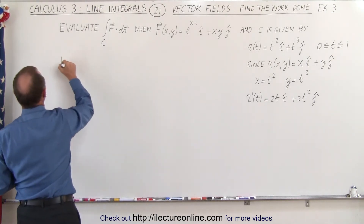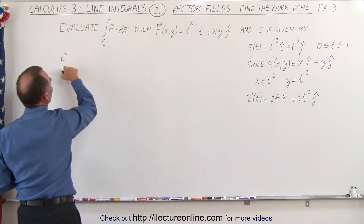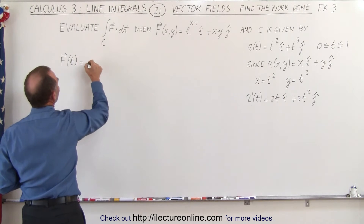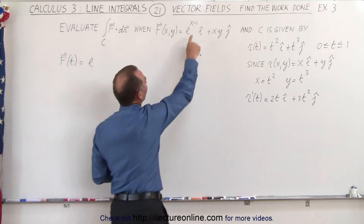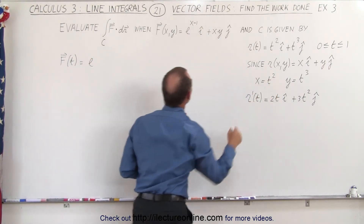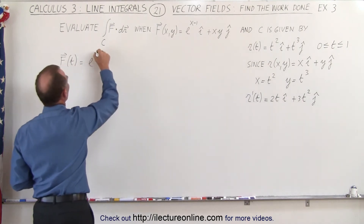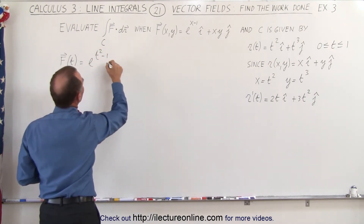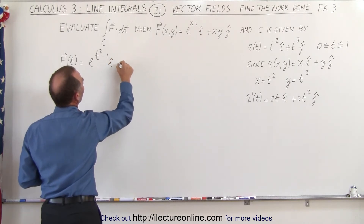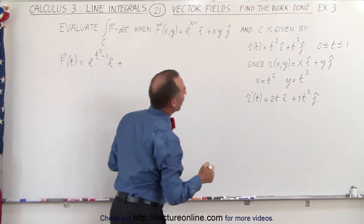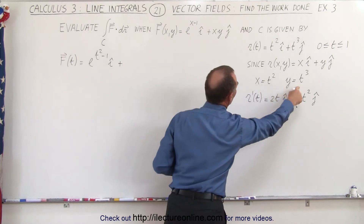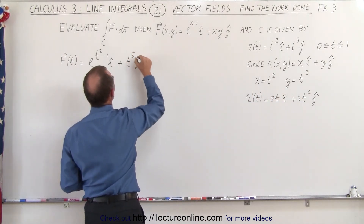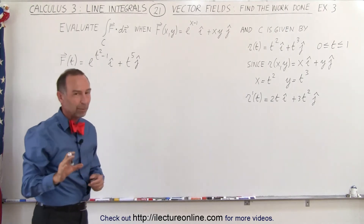We can write the vector field in terms of t: replacing x with t squared and y with t cubed, the exponent x minus y becomes t squared minus 1, giving e to the t squared minus 1 in the i direction. And x times y becomes t squared times t cubed, which is t to the fifth in the j direction.